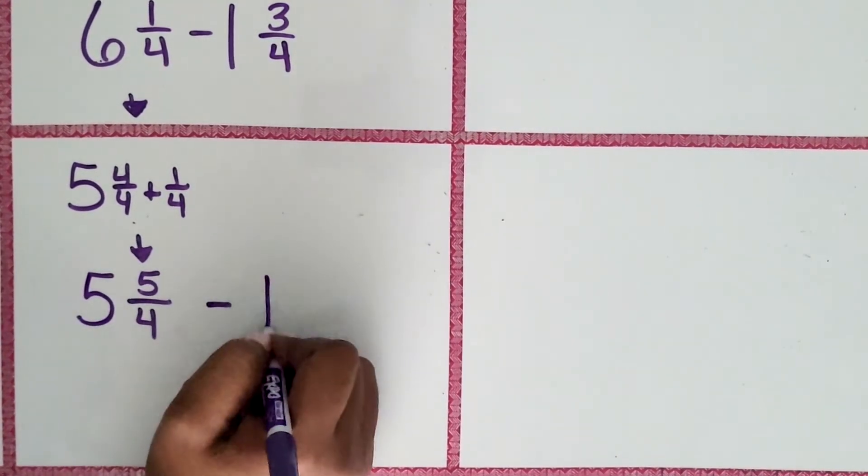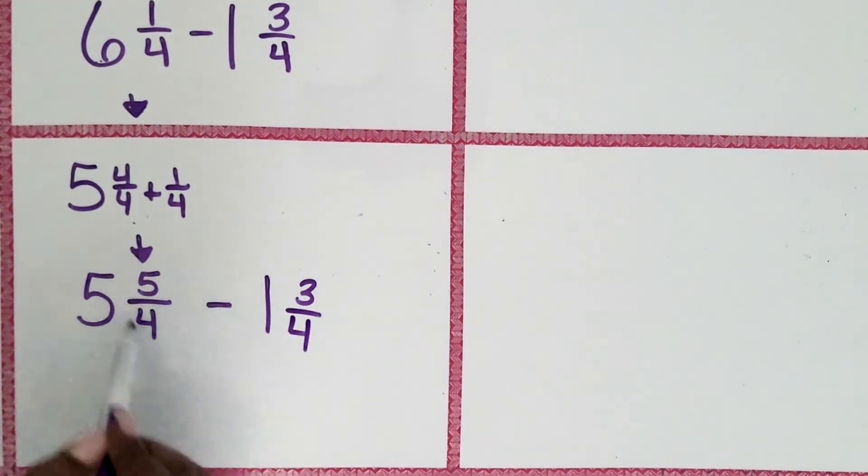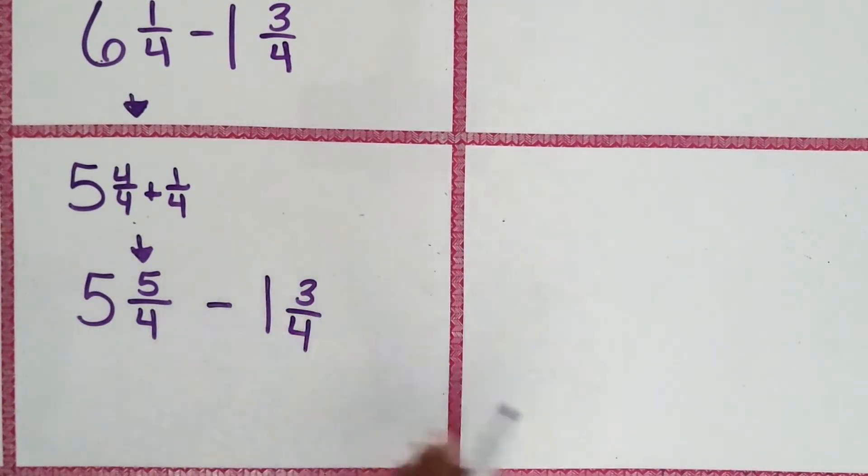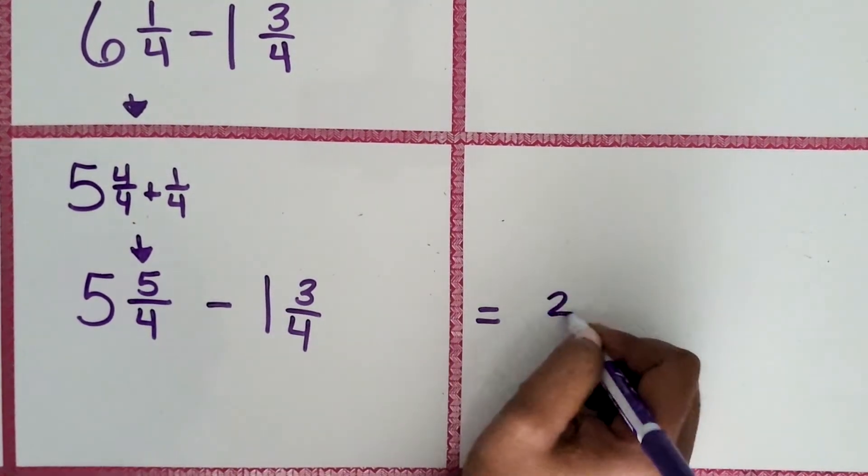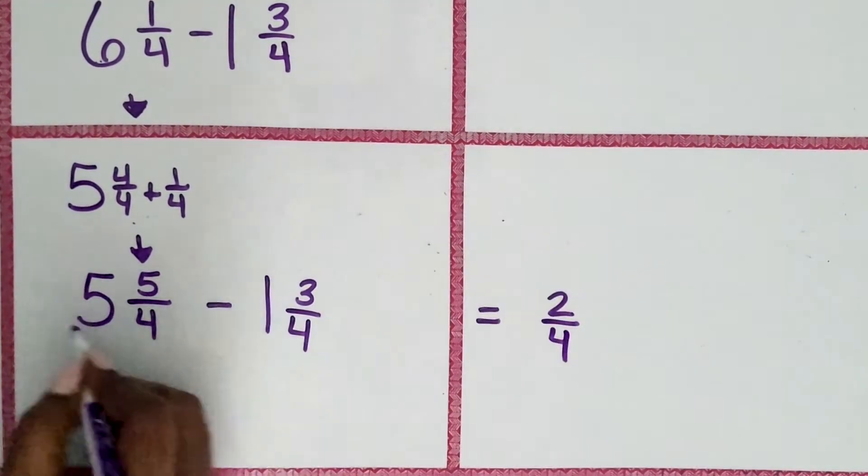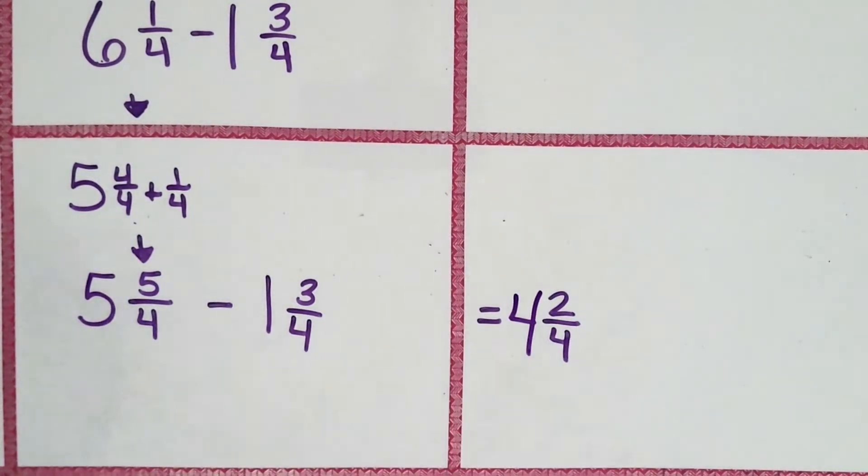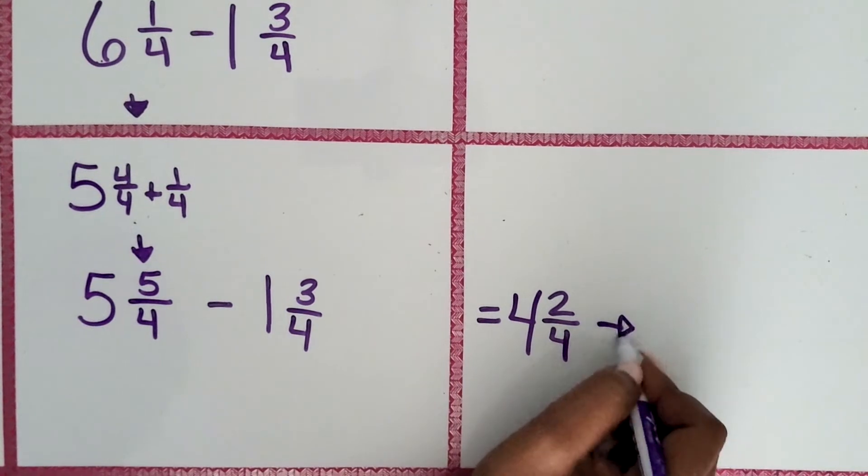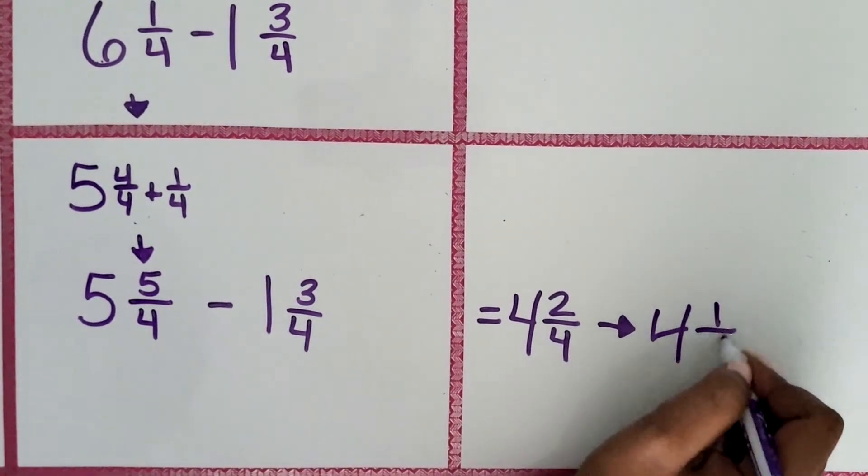Let's subtract now one and three-fourths. Now our fraction is greater than our second fraction. Five-fourths minus three-fourths is two-fourths. Five wholes minus one whole is four wholes. So we have four and two-fourths, which we can simplify into four and one-half.